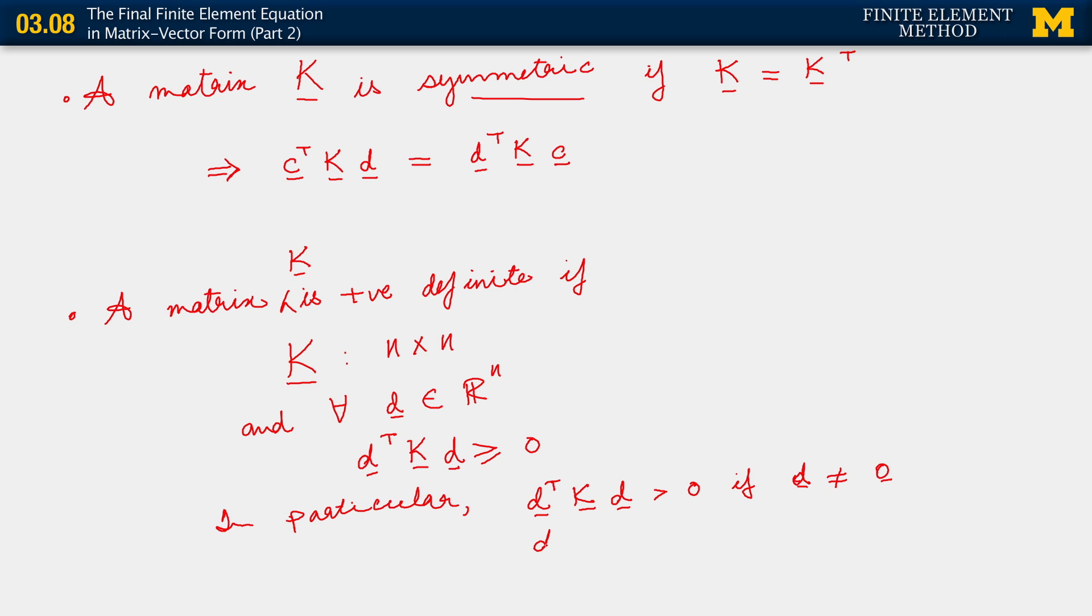And then, what that means is that therefore if K is positive definite, then D transpose KD equals 0 if and only if D equals 0.